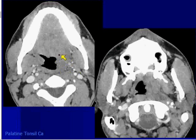This is a patient with a left palatine tonsil squamous cell carcinoma. Notice here's the internal carotid and prevertebral musculature. They have a cystic nodal metastasis. Patients with squamous cell carcinoma of Waldeyer's Ring can have cystic nodal metastases — more commonly seen with tonsil cancers, base of tongue, and sometimes nasopharyngeal carcinomas.